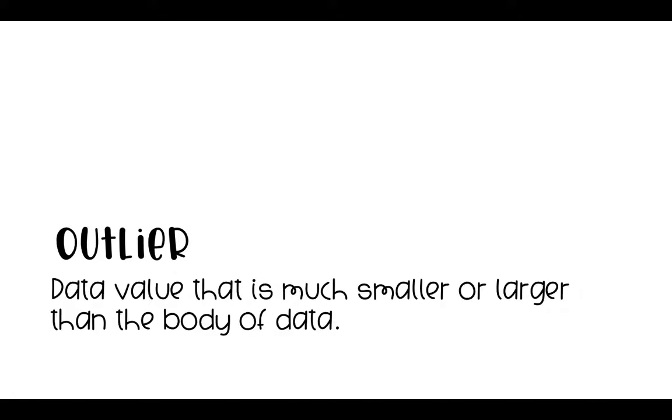So next little thing we're going to talk about is outliers. So what's an outlier? An outlier is the data value that is much smaller or greater than the main body of data. So it's when we have a piece of data that's out on its own.